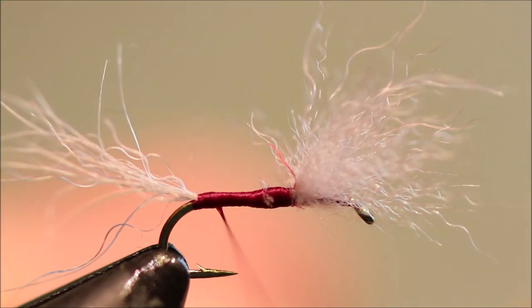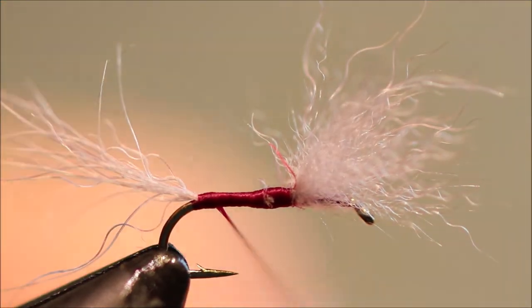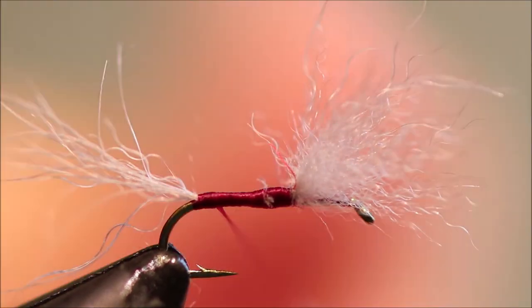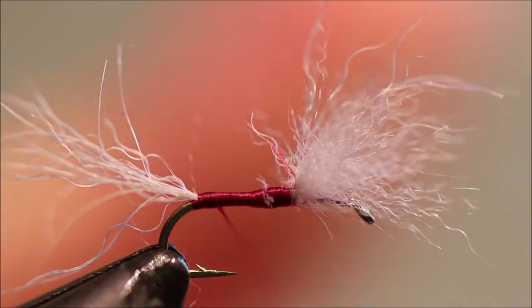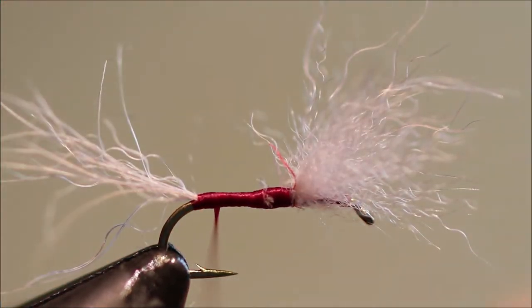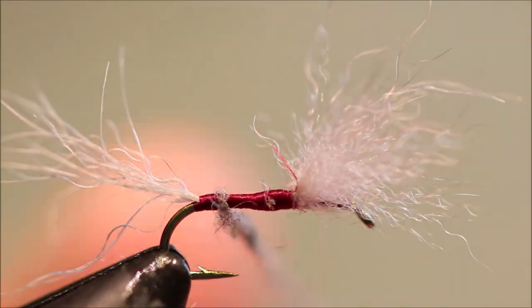So, getting a sparse noodle, a little bit of dubbing on here. You don't want loads—I mean really you want the thread to show through the dubbing a wee bit to get that colour.